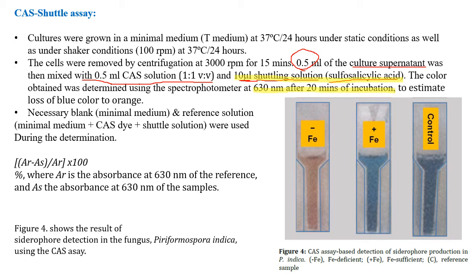You estimate the loss of blue color to orange. In the image, you can see a control, an iron-deficient culture (Fe⁻), and an iron-sufficient sample (Fe⁺) where iron has been chelated by the siderophore.